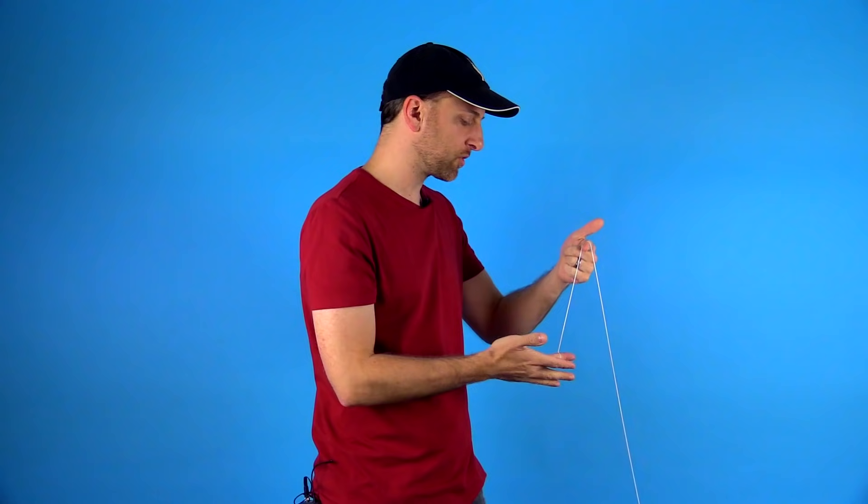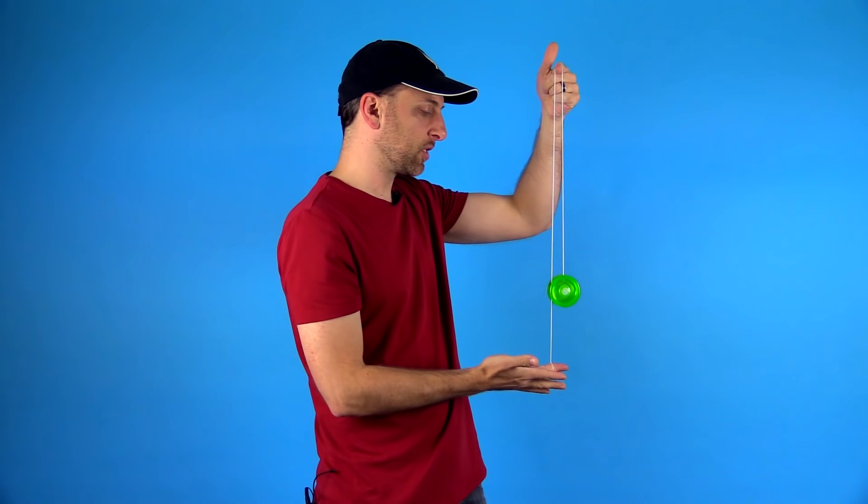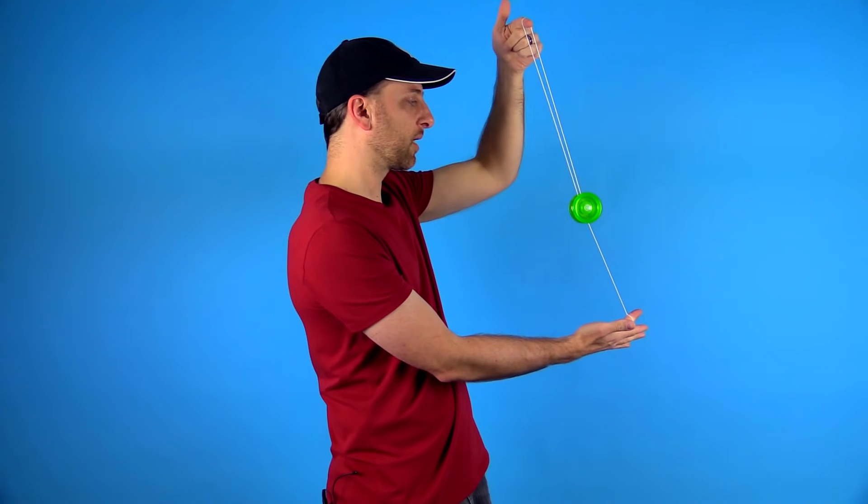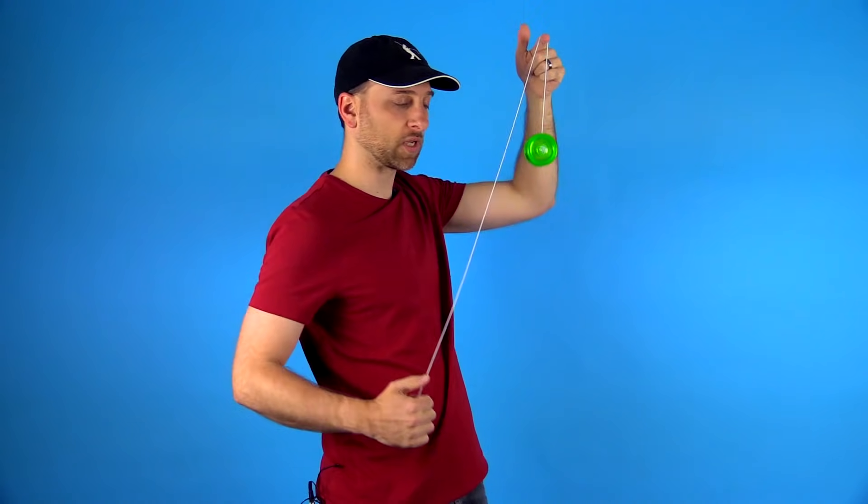To make sure the yoyo doesn't bounce off the string, the easiest way is to just make sure your yoyo hand is slightly in front of your top hand, and that way it won't bounce as it goes up.